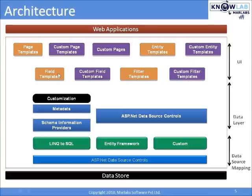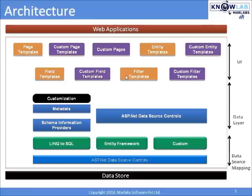Entity templates provide more flexibility than customizing individual data fields and are mostly useful when you want to create custom UI and apply it to default or custom page templates. Field templates are user controls that render the UI for individual data fields. By default, dynamic data selects a field template based on the data type of the field being displayed — for example, boolean data uses a boolean field template, and text data uses a text field template. Filter templates are user controls that render the UI for data filtering, which lets the user select the table rows to display based on a column value — for example, displaying all rows that contain a certain category.